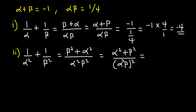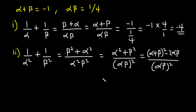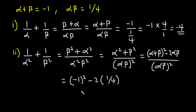Now alpha squared plus beta squared equals alpha plus beta all squared minus 2 alpha beta. Alpha plus beta is negative 1, so we have negative 1 all squared minus 2 times 1 over 4, which gives 1 minus 1 over 2, equal to 1 over 2. The denominator is alpha beta all squared, which is 1 over 4 all squared, equal to 1 over 16. So the final answer is (1/2) divided by (1/16), which equals 8.